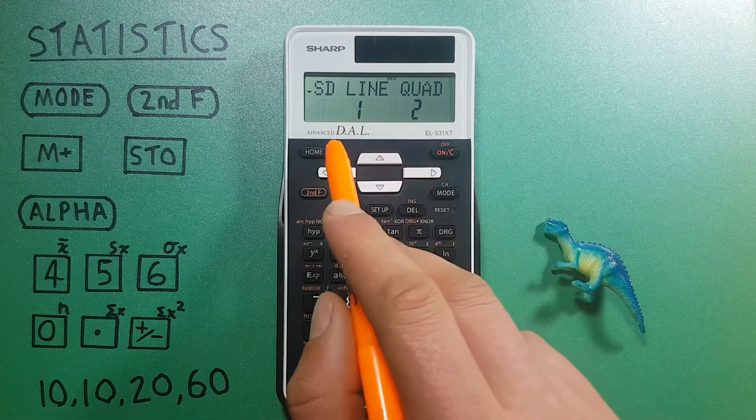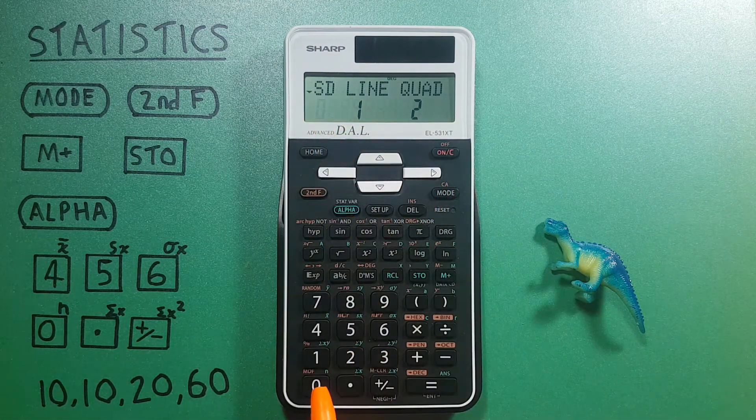For this example we'll be using the SD option, so zero.